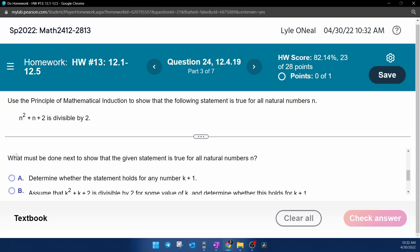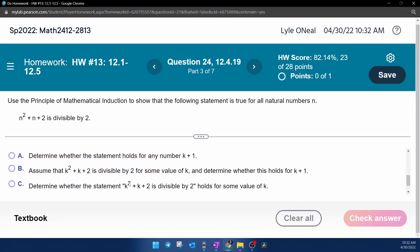Part 3. What must be done next to show that the given statement is true for all natural numbers? Well, remember, we have to assume that it's true for k and then prove that it's true for k plus 1. So which option says that? Option B, assume that the statement is true for k, plugging in every n for a k. We need to assume that it's divisible by 2 and then determine whether it holds for k plus 1. So that is the second condition for the mathematical induction.